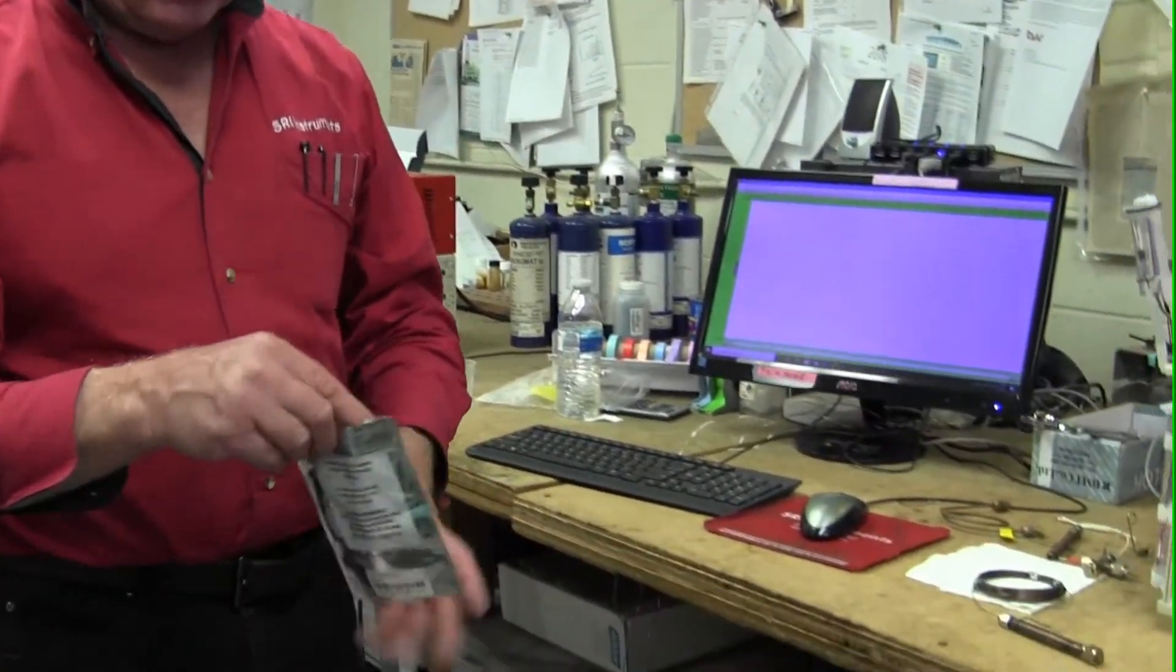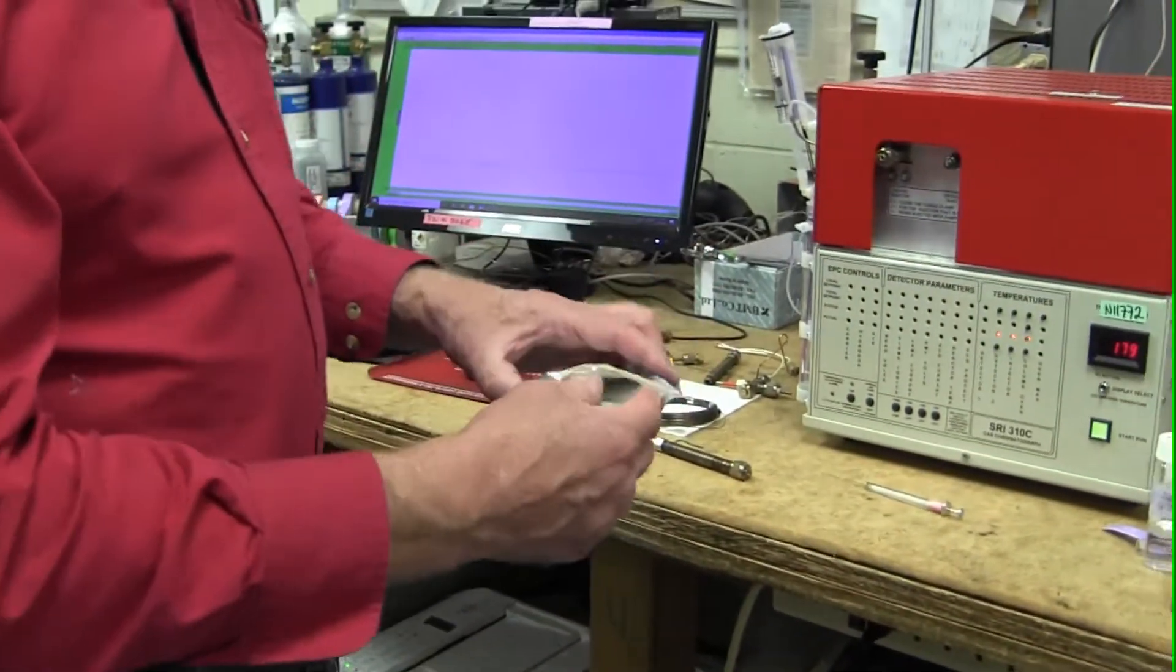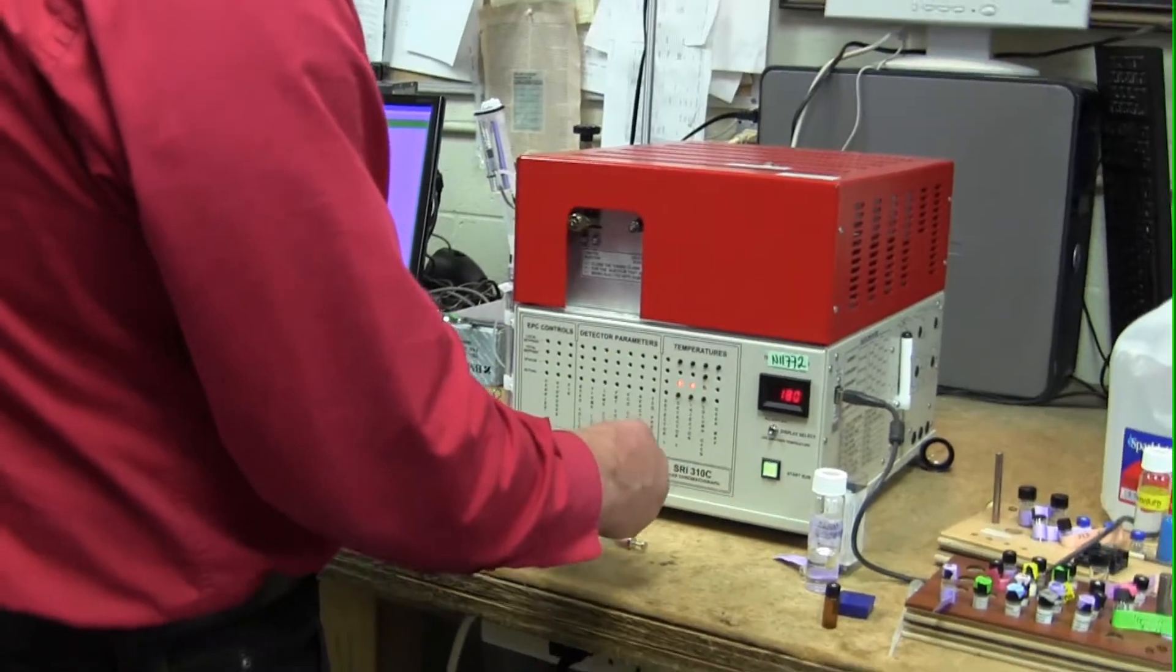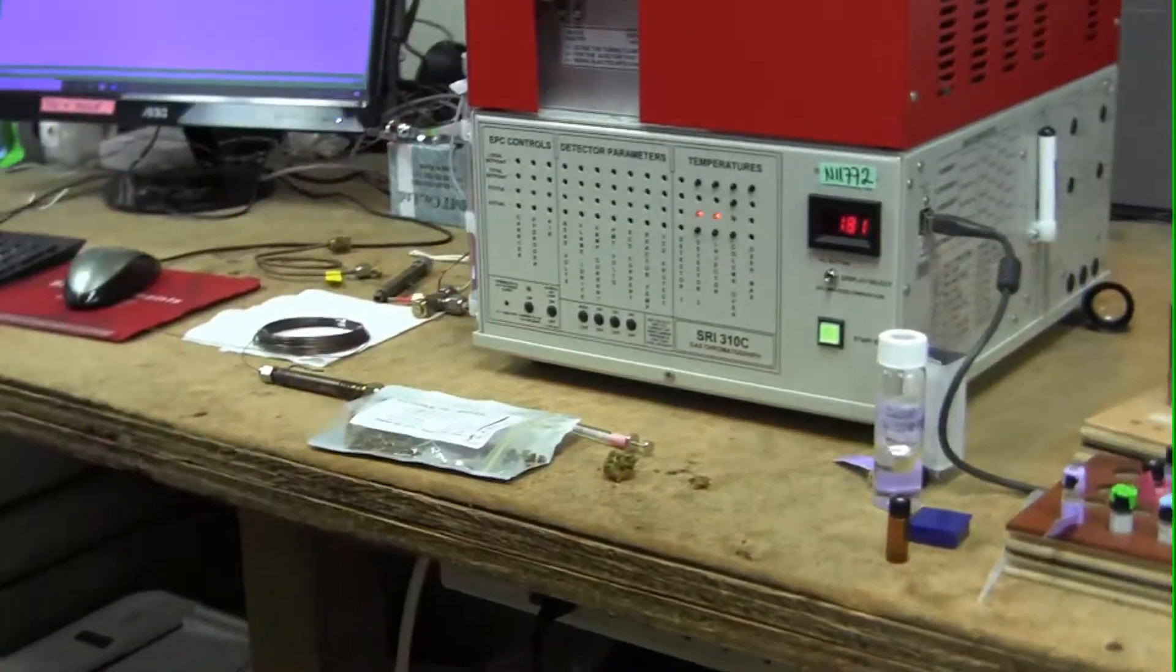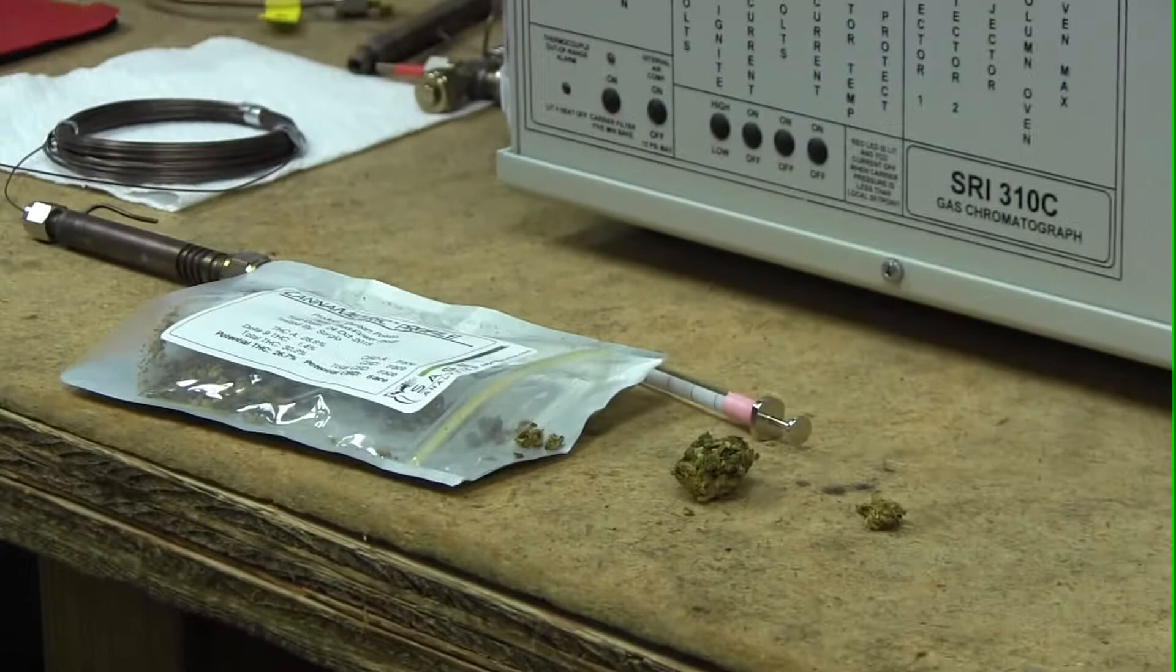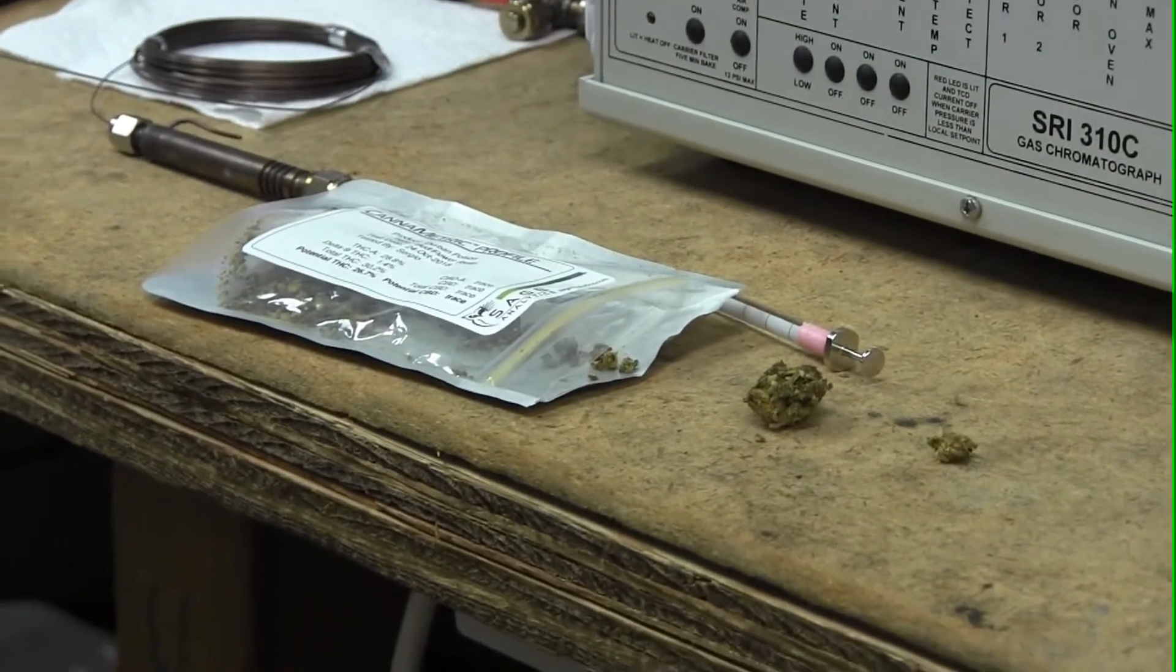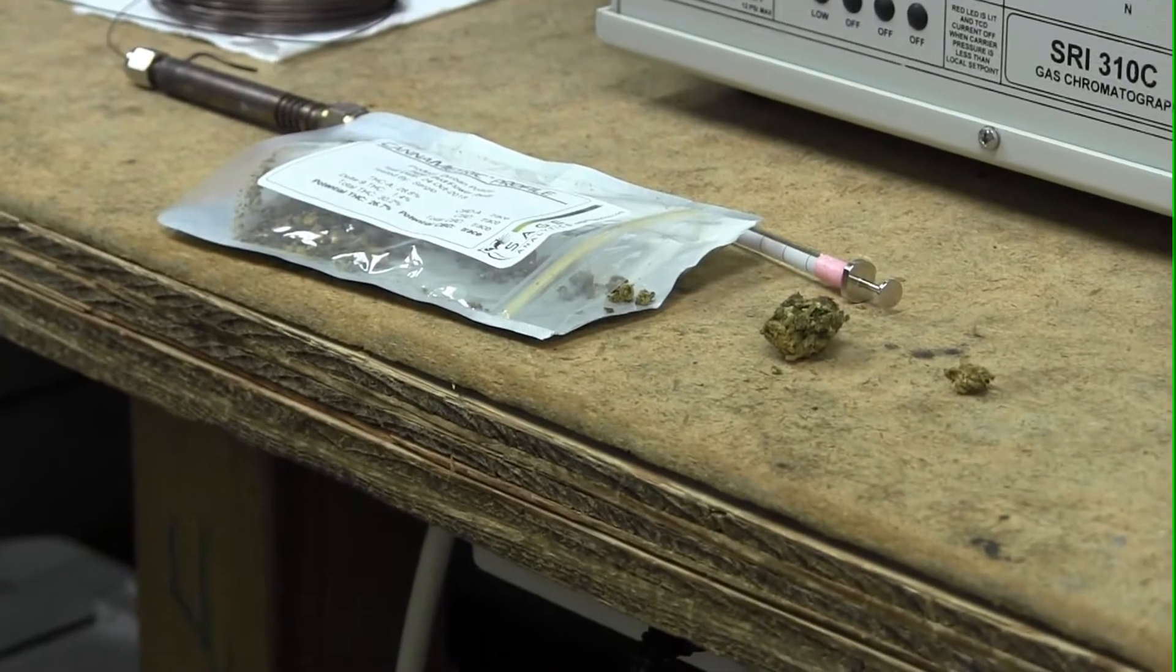So here's a sample that somebody kindly donated. It's Durban poison. Now this could be a flower sample or it could be an oil sample - it could be a sample that looks like this.